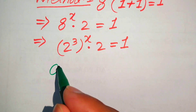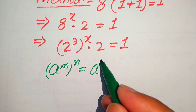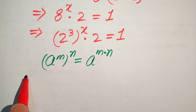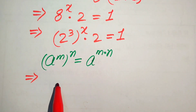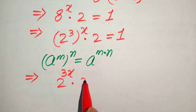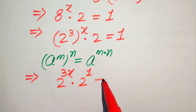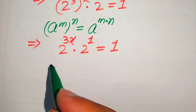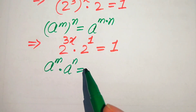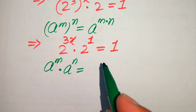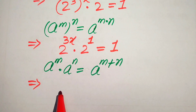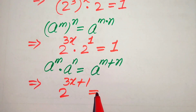In the next step, we use the exponent law: if we have a to the power of m, to the power of n, it equals a to the power of m multiplied by n. After applying this rule, we multiply the two exponents and it becomes 2 to the power of 3x, multiplied by 2 — where the exponent of this 2 is 1 — equals 1. We then use another exponent law: if the bases are the same, we add the exponents, so it becomes 2 to the power of 3x plus 1 equals 1.